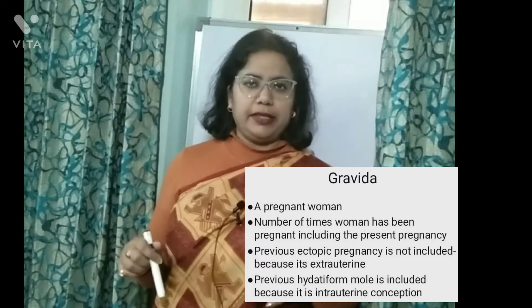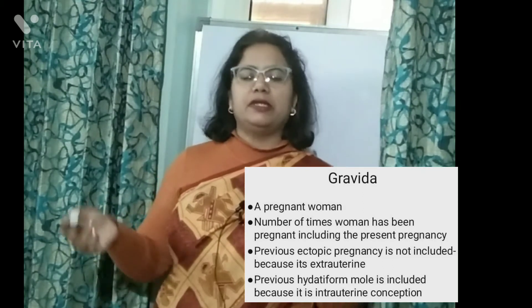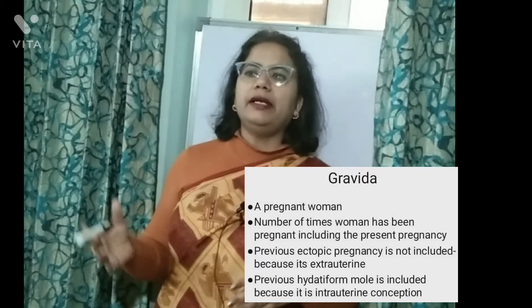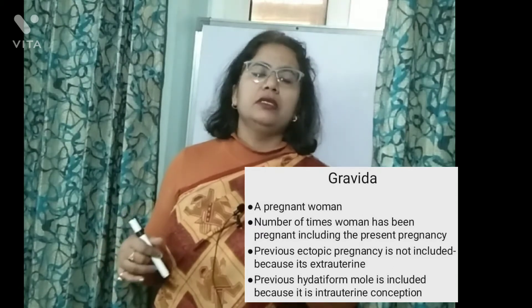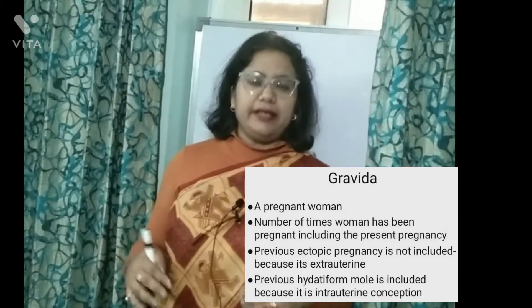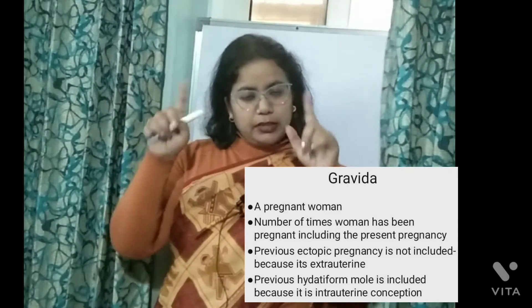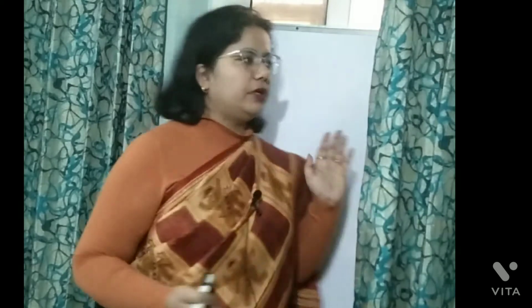Suppose she is second time pregnant, coming to you with three months amenorrhea, and she says her first pregnancy was a vesicular mole for which she underwent suction evacuation. You will say she is second gravida. The vesicular mole is included in gravida because it is intrauterine and the products of conception are aborted — it amounts to abortion one. Ectopic pregnancy is outside the uterine cavity, so it will not be included in gravida.